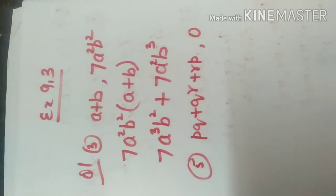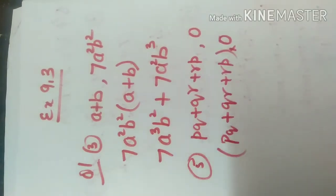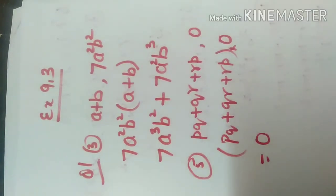Now this example: pq plus qr plus rp multiplied to 0. We know that any expression multiplied to 0 gives the answer 0. So you just write it in multiplication form and the answer is 0.